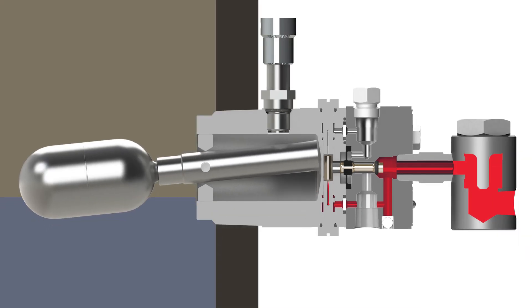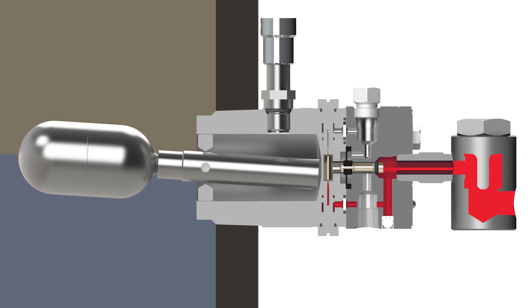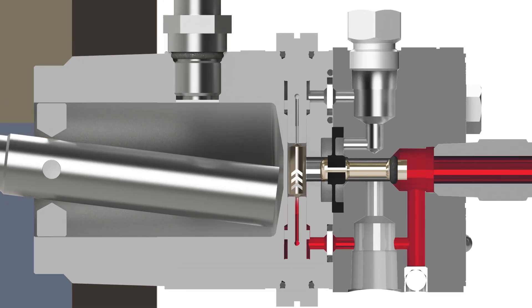As the liquid level rises and the float moves up, the float lever pivots down repelling the shuttle up. This opens the channel for the supply pressure to contact the diaphragm.